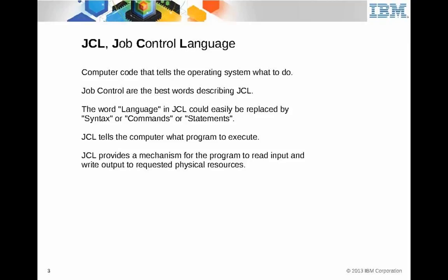JCL tells the computer what program to execute. When JCL enters the system, you say here's the program I want. JCL is a mechanism — when the program wants to read or write things, JCL provides the ability for that program to read and write to different physical devices. Inside the program it's logical, so this was a level of virtualization that they put together over 50 years ago.